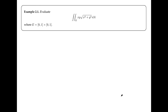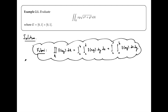Here we have a double integral of xy times the square root of x squared plus y squared, integrating over the rectangle [0,1] × [0,1]. The main computational tool for evaluating double integrals is Fubini's theorem, which says we can turn a double integral into an iterated integral. We can also integrate in either order — with respect to y first or with respect to x first.